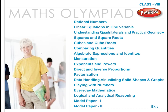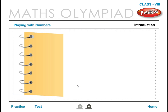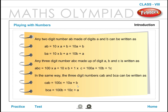Maths Olympiad Class 8: Playing with Numbers. Any two-digit number AB, made of digits A and B, can be written as AB = 10 × A + B = 10A + B. Similarly, BA = 10 × B + A = 10B + A.